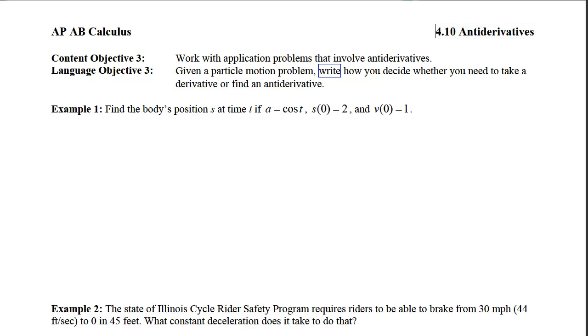With example 1, we would like to find the body's position s at time t if the acceleration equals cosine t, and we are given two points. One of the points is on the position curve, and one of the points is on the velocity curve.